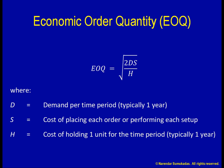Finally, the EOQ is inversely proportional to the square root of the inventory holding cost. Therefore, the larger our holding cost, the smaller our batch sizes will need to be, and consequently our inventories will be smaller.